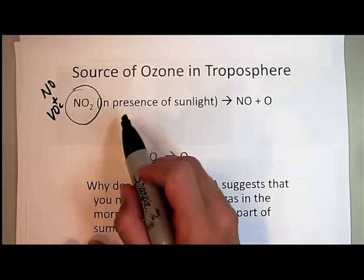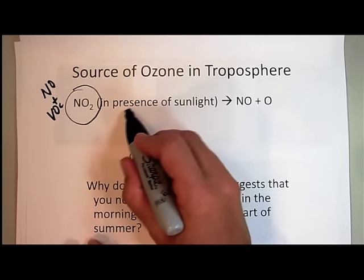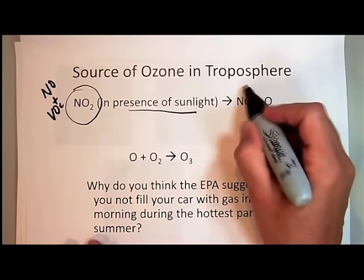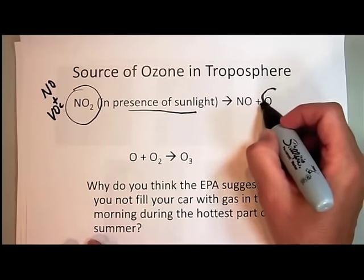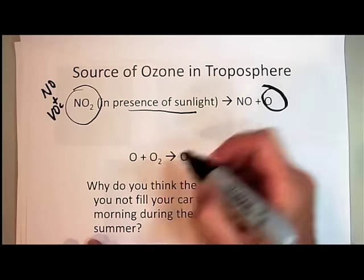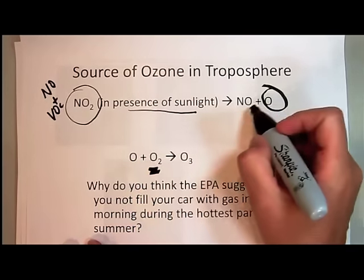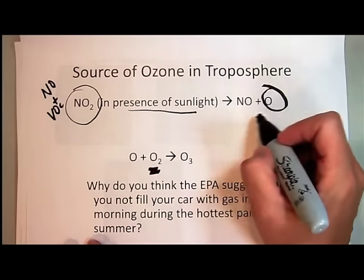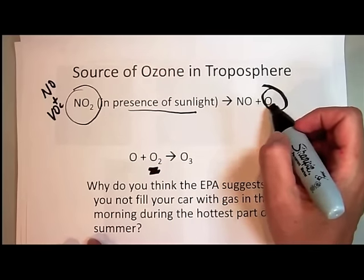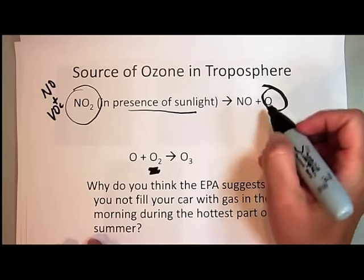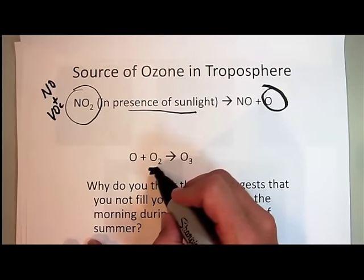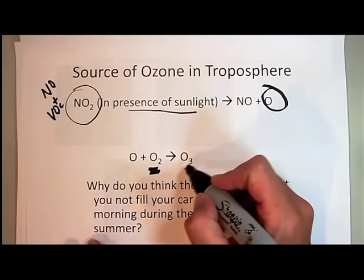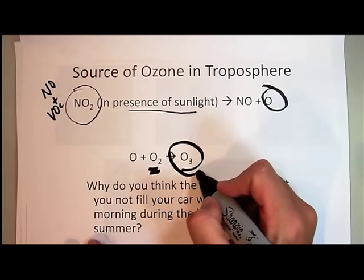What happens to the NO2 in the presence of sunlight is the NO2 is broken down into a nitrogen monoxide and a single oxygen atom. Oxygen exists stably as O2, but an individual oxygen atom is very, very reactive. Since what's in the air mostly is nitrogen or oxygen, that oxygen atom is going to react very quickly with molecular oxygen or with nitrogen to form more nitrogen oxide, giving us ozone. So that's where the ozone comes from.